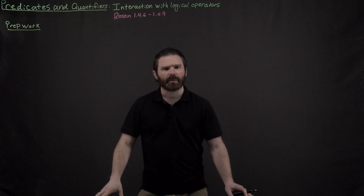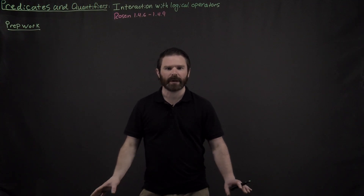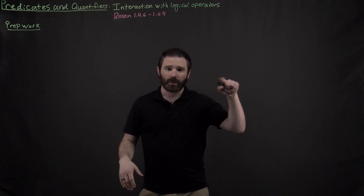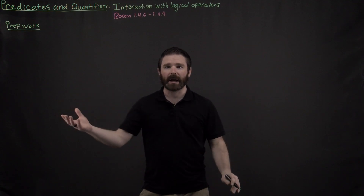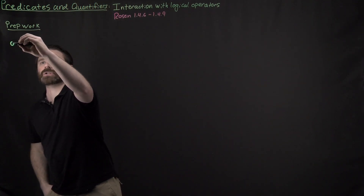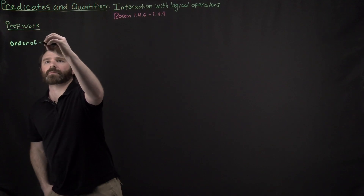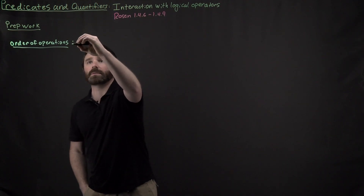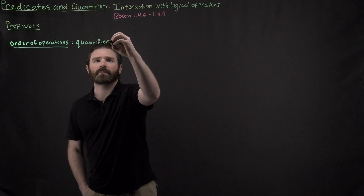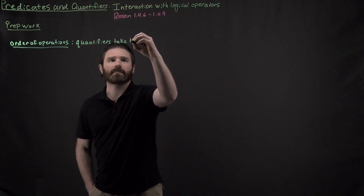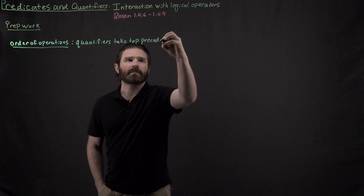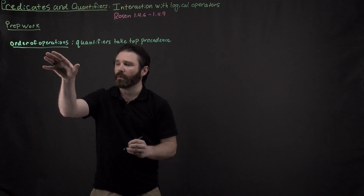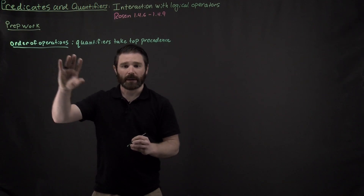Do you remember back when I was talking about precedence of operators — which ones you evaluate first? Now that we have new symbols for 'for all', 'there exists', and 'there exists unique', we're going to have to update that order of operations. Quantifiers take top precedence. So if you consider our operators in the order of precedence, it would look as follows.